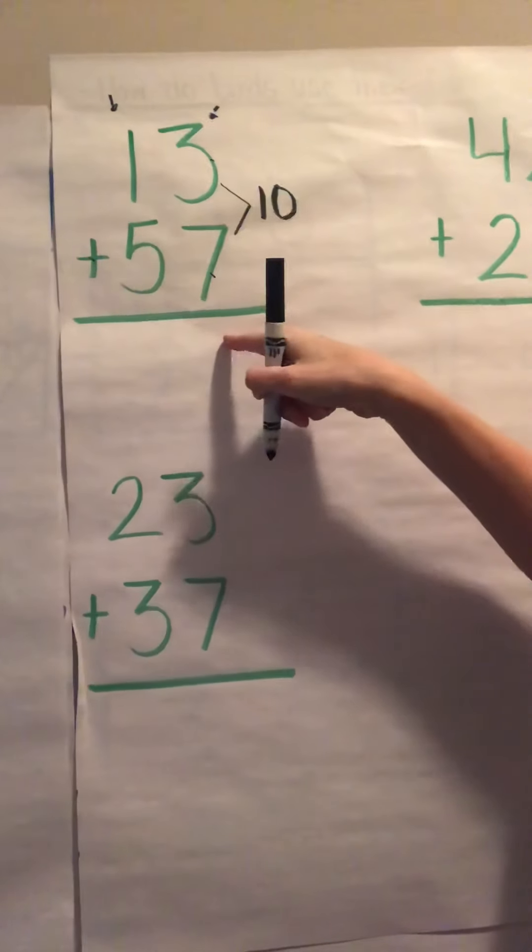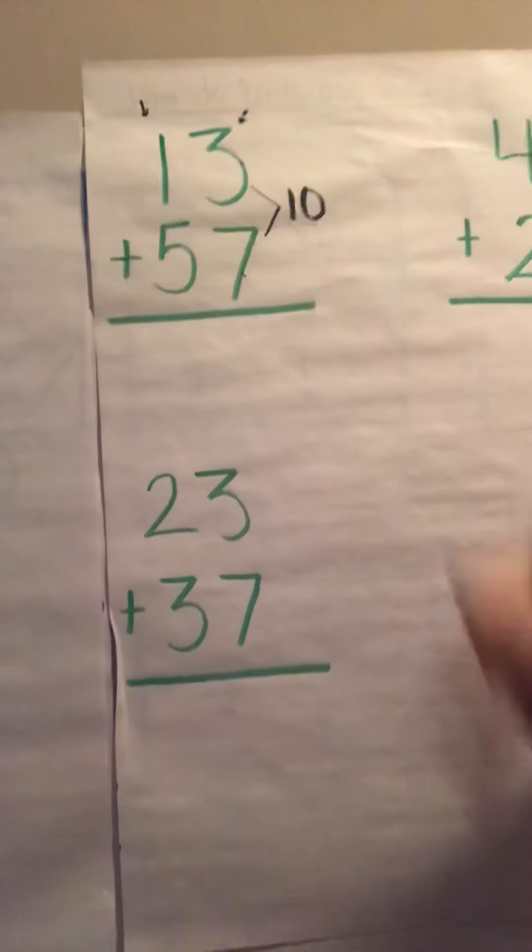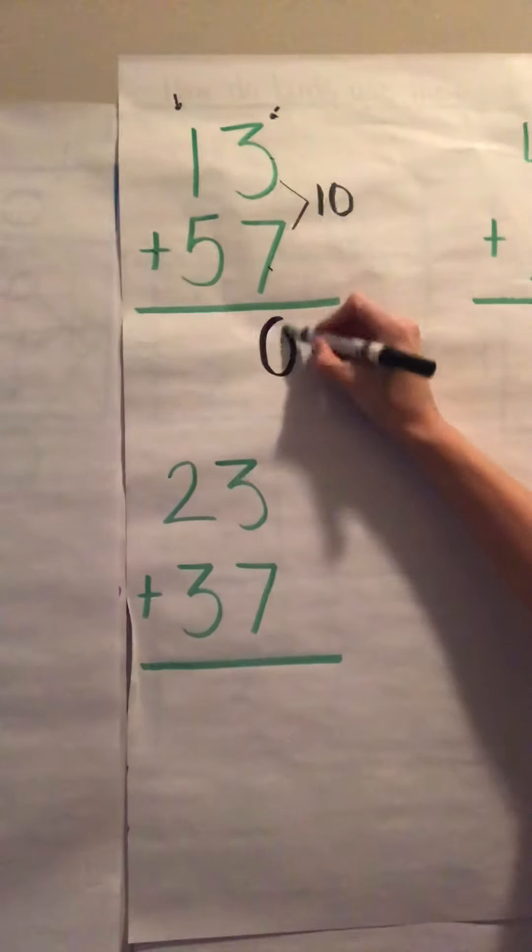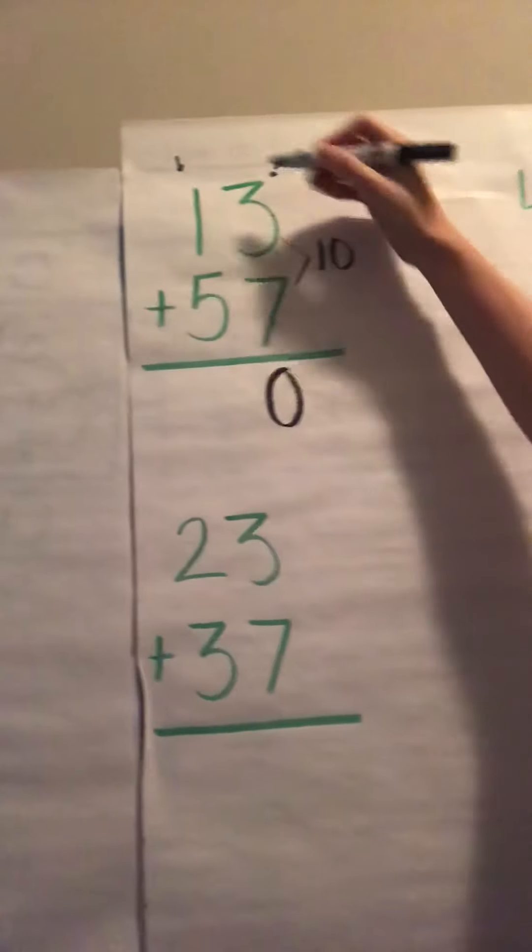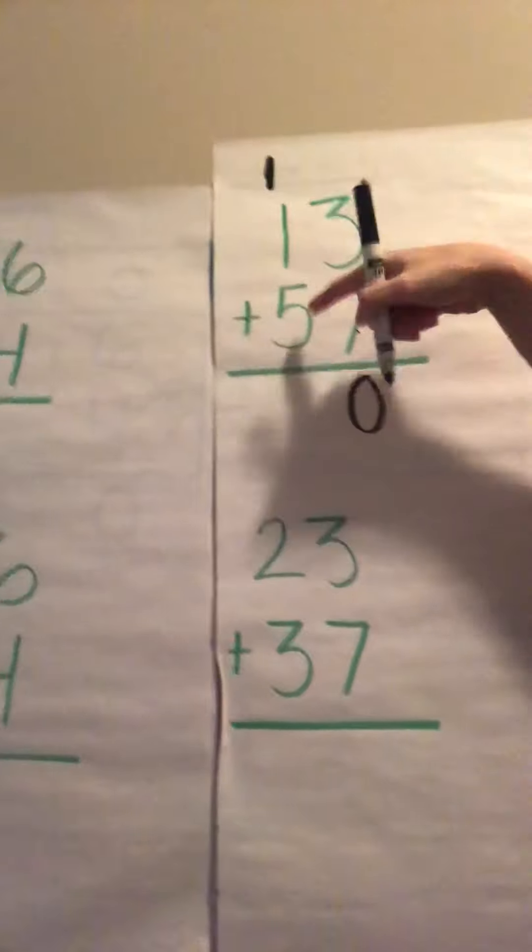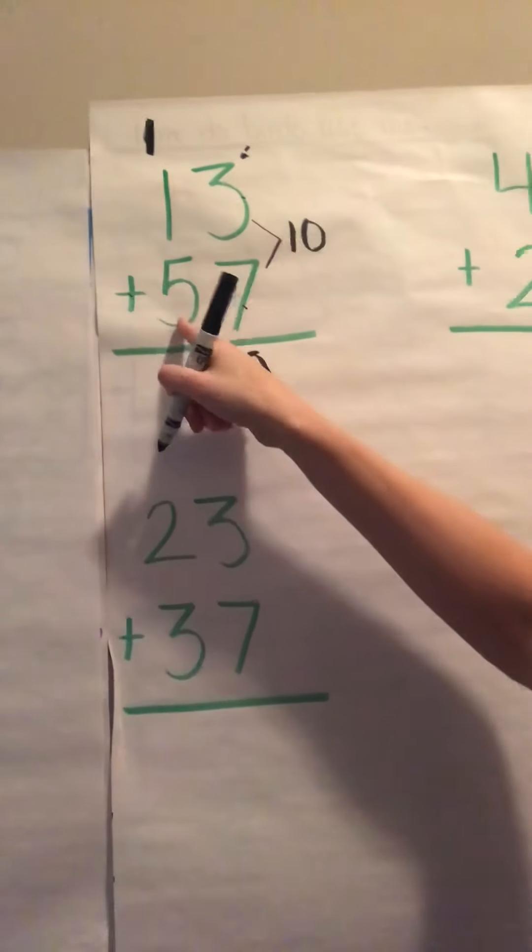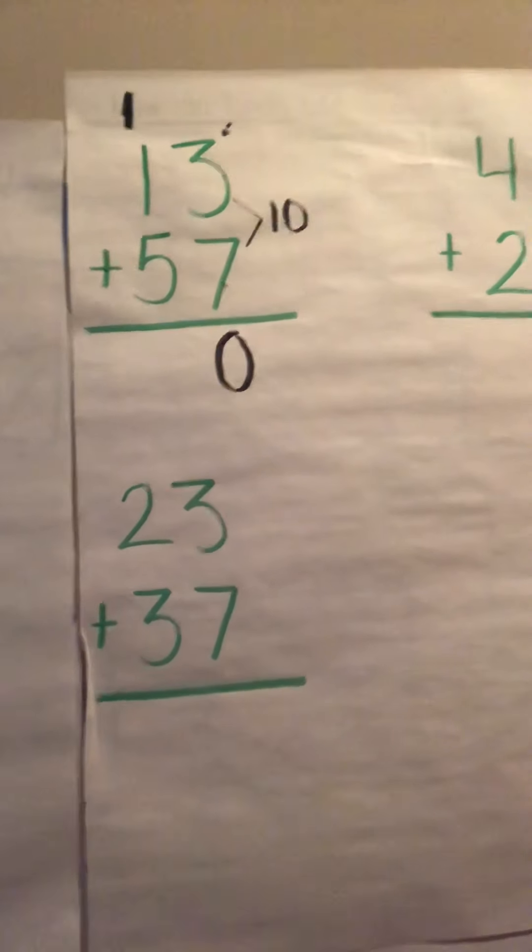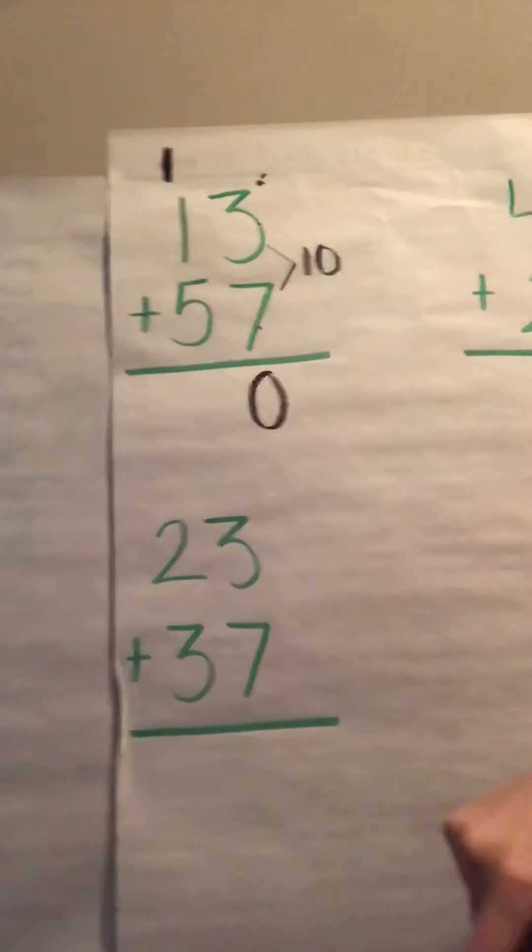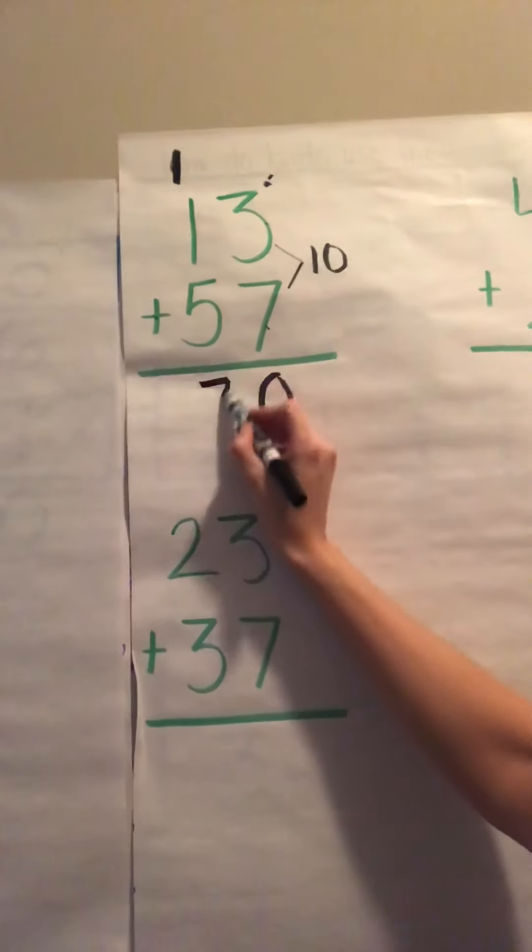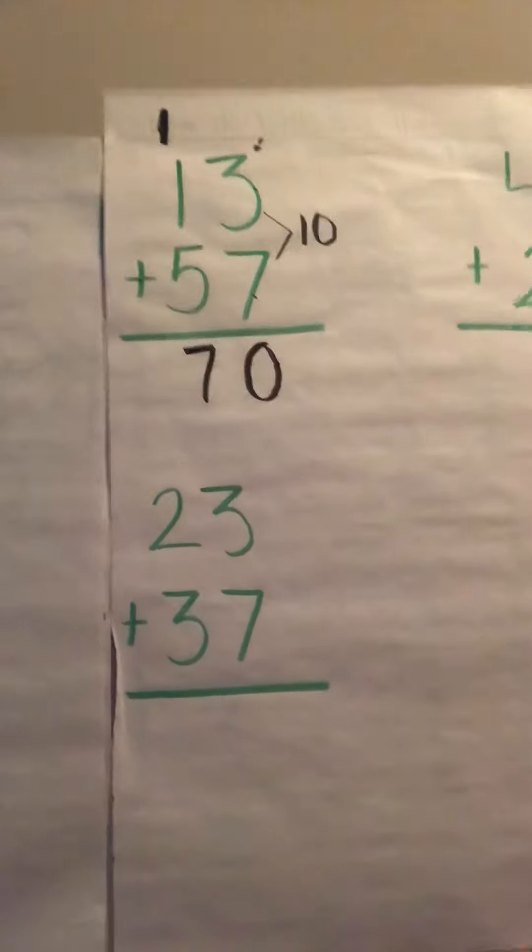What number, what do I put down here? The 1 or the 0? Right, the 0 because that's in the ones place. And where does the 1 go? Right, it goes up top to over to my tens column. Now we have 1 plus 5 which is 6 but we can't forget this one. So 6 plus 1 more is 7. So 13 plus 57 equals 70.